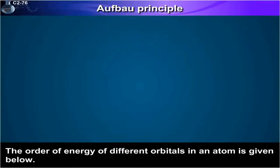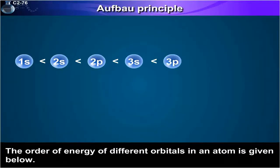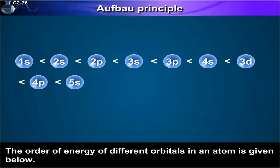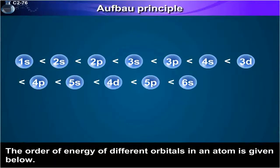The order of energy of different orbitals in an atom is given below: 1s less than 2s less than 2p less than 3s less than 3p less than 4s less than 3d less than 4d less than 5p less than 6s less than 4f less than 5d and so on.